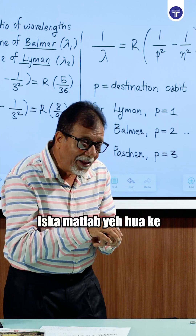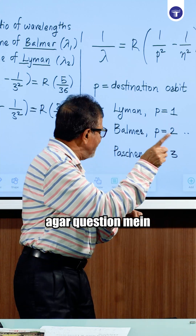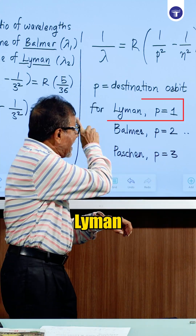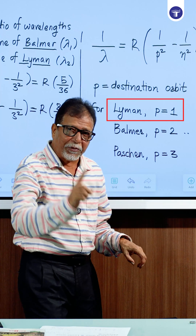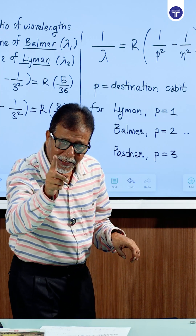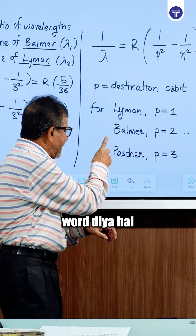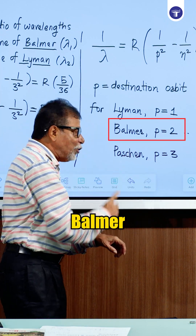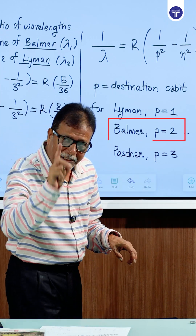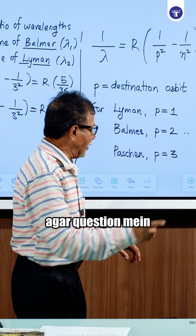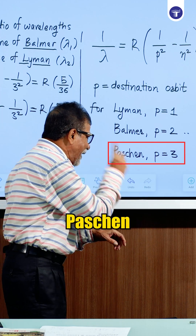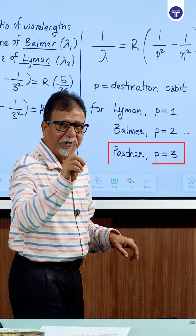This means that if the question involves the Lyman series, the P value is 1. If the question involves the Balmer series, the P value is 2. If the question involves the Paschen series, the P value is 3.